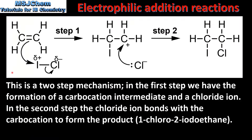In the last example we'll look at the mechanism for the reaction between ethene and an interhalogen. The name of this interhalogen is iodine monochloride. Iodine monochloride is a polar molecule because of the difference in electronegativity between iodine and chlorine. The chlorine has a partial negative charge and the iodine a partial positive charge. Just like in the previous examples, we have heterolytic bond fission of the bond between iodine and chlorine, which is shown by this curly arrow. The iodine bonds to one of the carbon atoms of the double bond, and the movement of the pair of electrons is shown by this curly arrow. This results in the formation of a carbocation and a chloride ion.